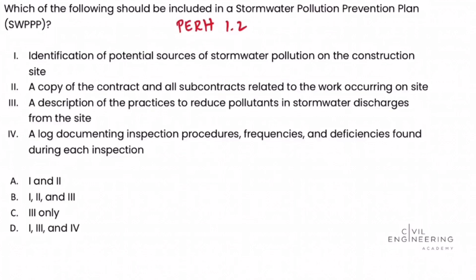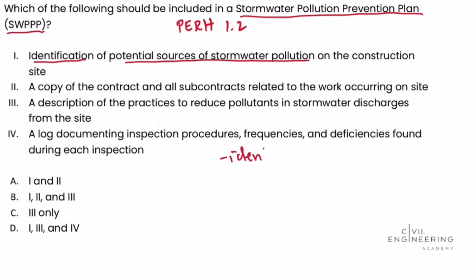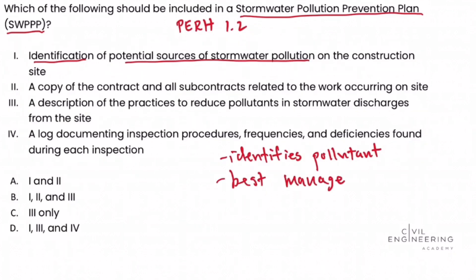Looking at all the options, let's discuss each one. The goal of the stormwater pollution prevention plan, or SWPPP, is to identify potential sources of stormwater pollution on construction sites. Then we implement best management practices — techniques used to control stormwater runoff from the site and reduce the likelihood of pollution and contamination of surrounding waterways and the community during construction.